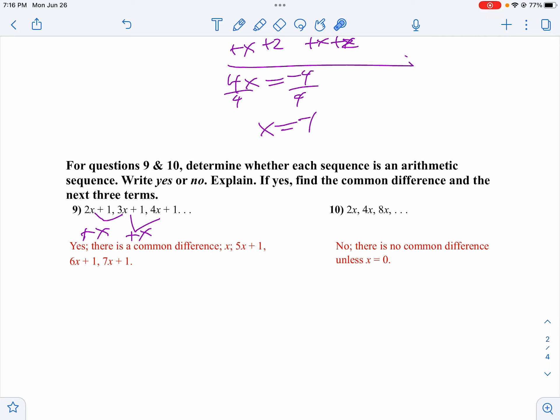So 4x plus 1 plus x is 5x plus 1. Add x, we get 6x plus 1. Add x, we get 7x plus 1.